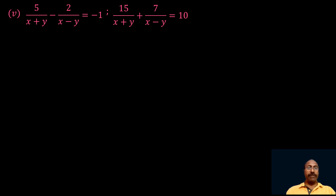The equations are: 5 by (x plus y) minus 2 by (x minus y) is equal to minus 1, and 15 by (x plus y) plus 7 by (x minus y) is equal to 10. We have to solve these equations by reducing them into a pair of linear equations.